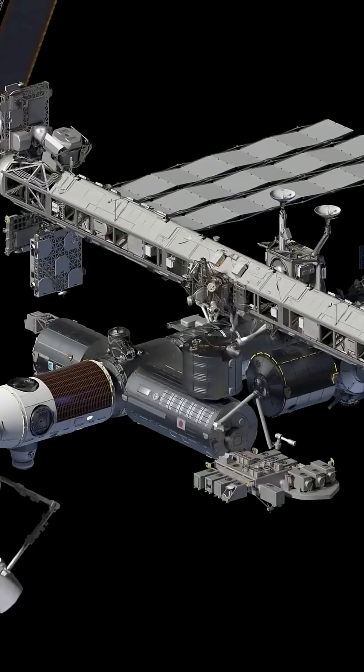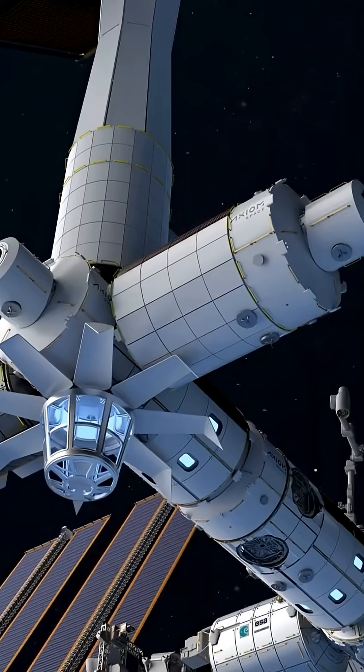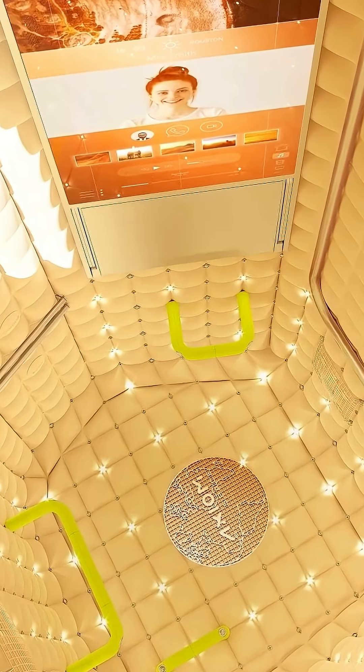But building a station isn't cheap. Axiom estimates $3 billion for its first four modules - far less than the ISS, but still enormous for a start-up.